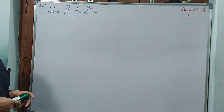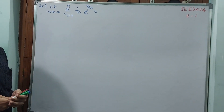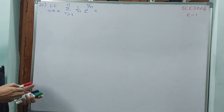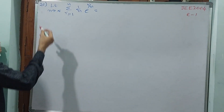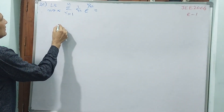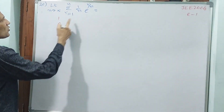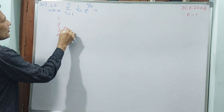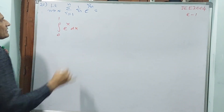Okay, see question number 20 — same way, earlier formula only. Accelerate this formula directly like this: integral 0 to 1, e power x dx.